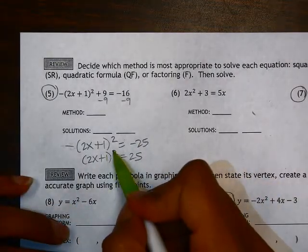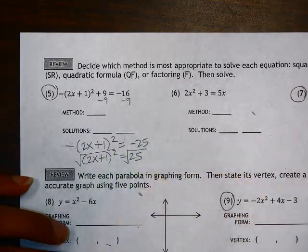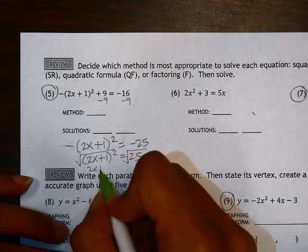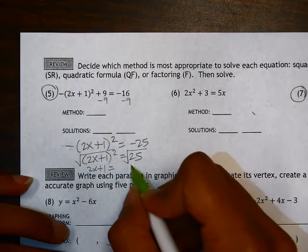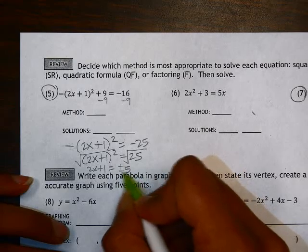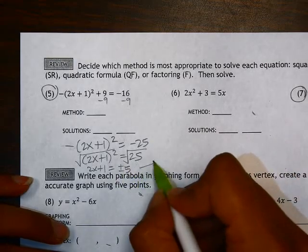Then to undo the squared, we can square root this side and square root this side. So that gives us 2x plus 1. This quantity could be equal to 5 or negative 5. So we're going to end up having two answers here.